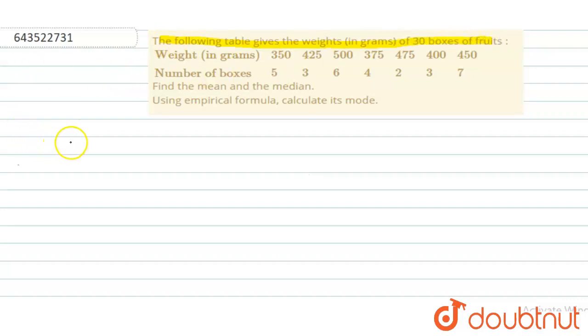Let us begin. X, f: 350 is 5, 375 is 4, 400 is 2, 425 is 3, 450 is 7, 475 is 2, and 500 is 6, which results to 30. Now what we will find out is cumulative frequency.